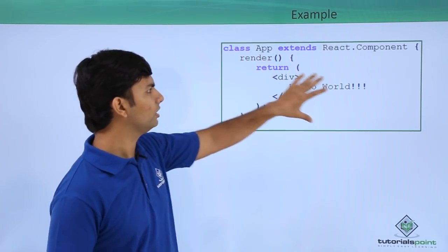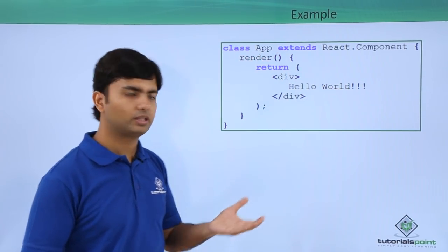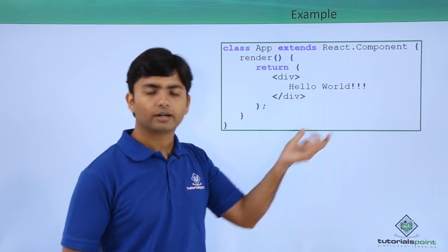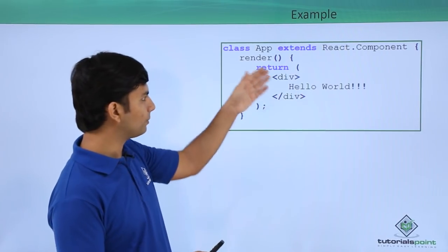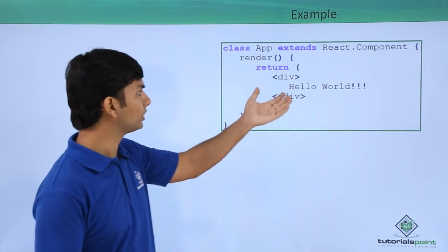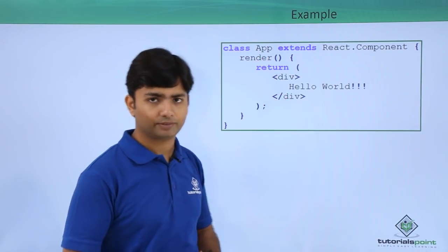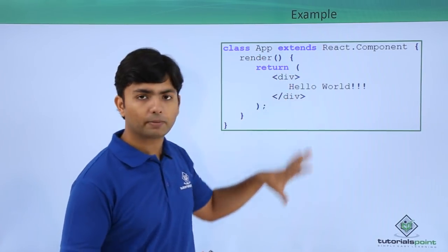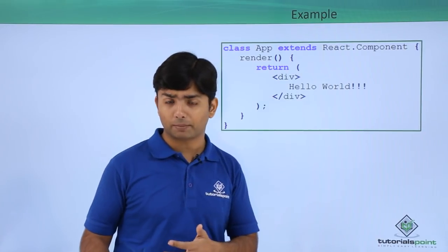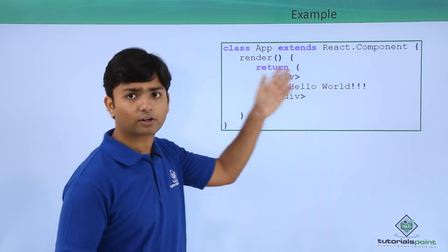So basically this is the JSX code. Here it's just like a div and inside which I am doing the hello world. If you want to return multiple tags, you can put them all like h1, paragraph. You can put them all inside this div - means there should be only one root element and multiple elements can be placed inside that root.